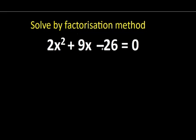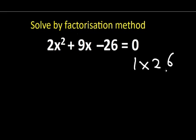The best way to find the factors of any number is to start by dividing it by 1. So 26 divided by 1 gives us 26, meaning we have 1 times 26. We can also divide it by 2 to give us 13, so 2 times 13 equals 26. If you divide 26 by 3, you get a decimal number, so it won't work.